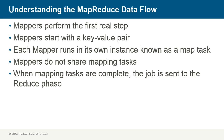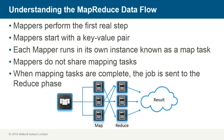The mapper performs the first real step in a MapReduce job. The mapper starts with a key-value pair. Mapper methods write the key-value pair, then forward them to the reducers. Mappers are single-threaded, so each mapper runs in its own instance, known as a map task. Mappers do not share mapping tasks.